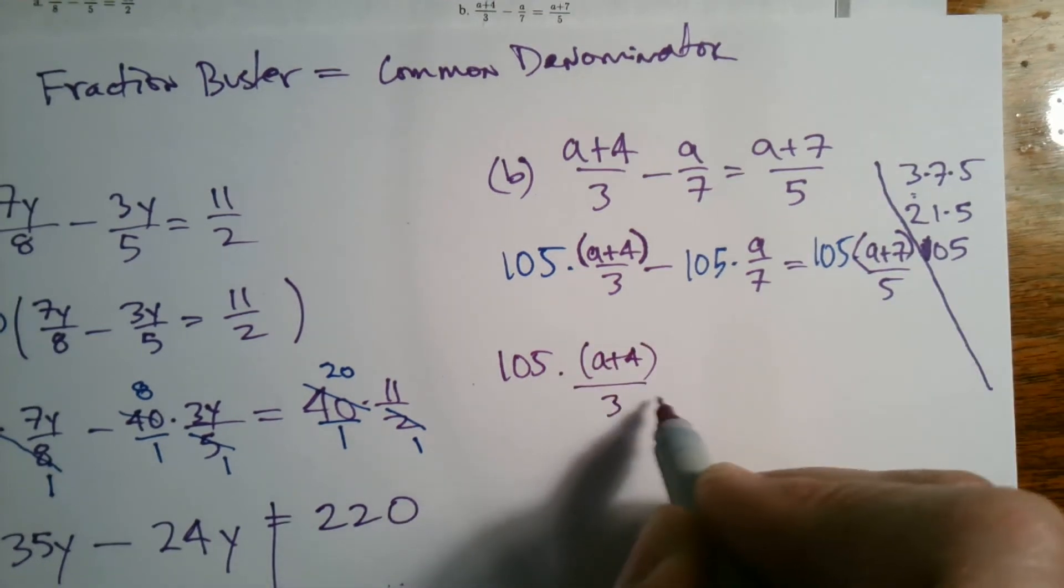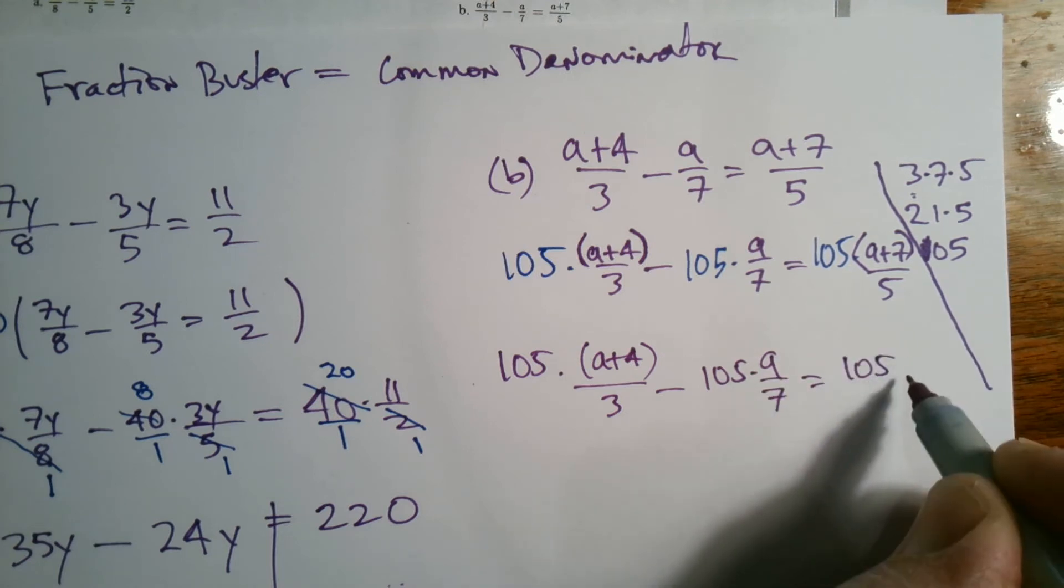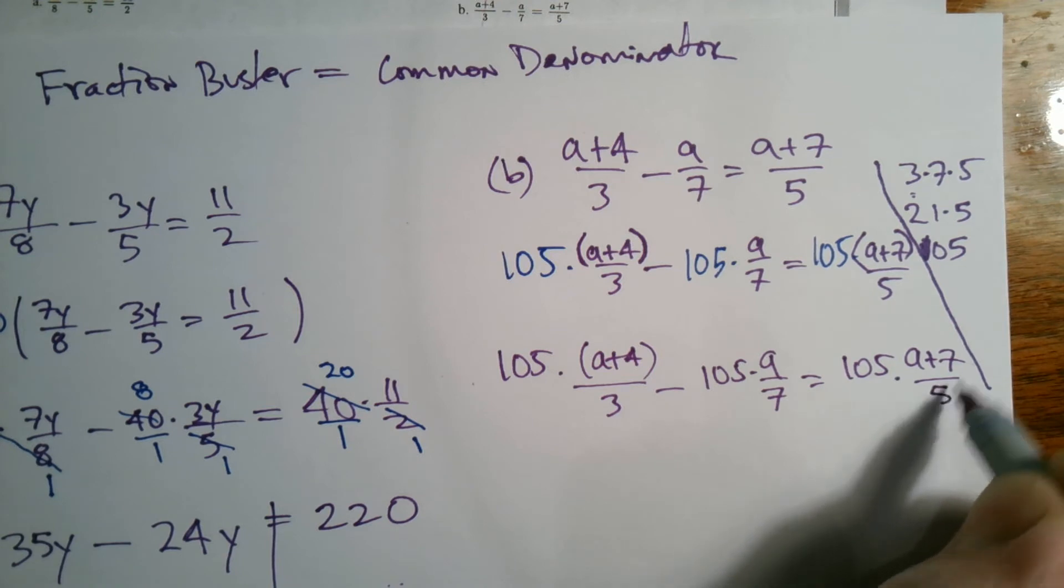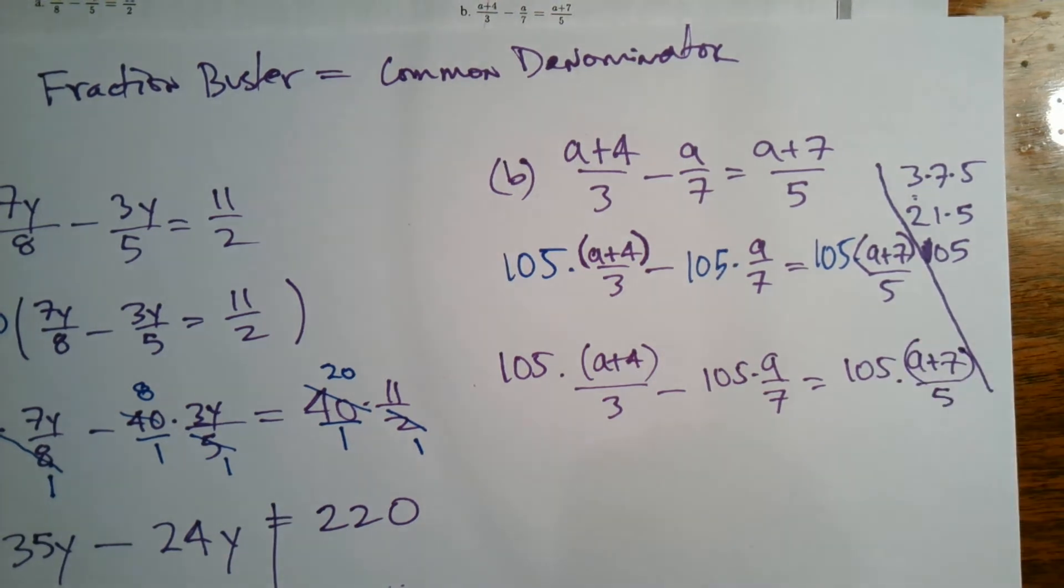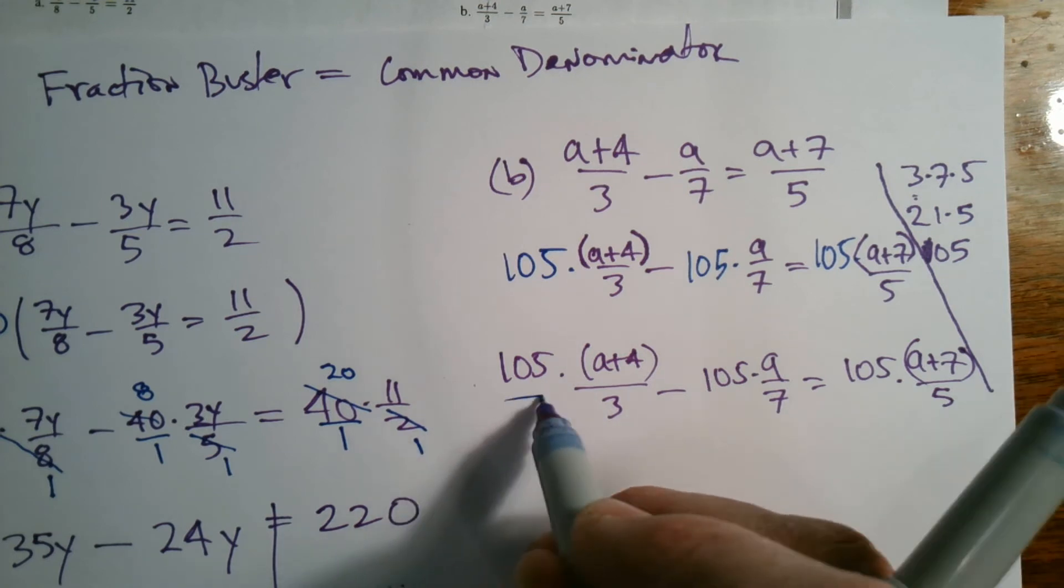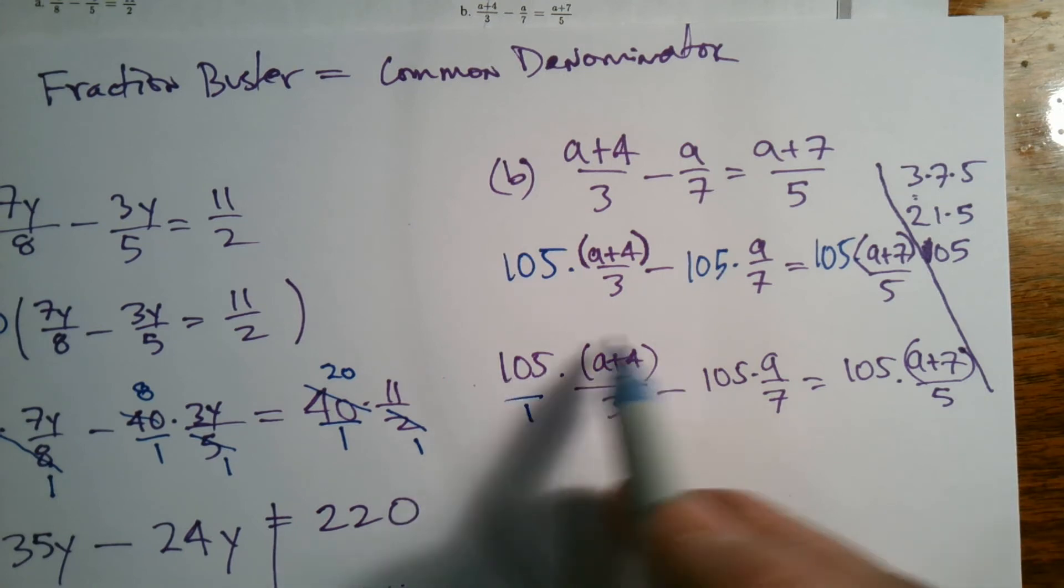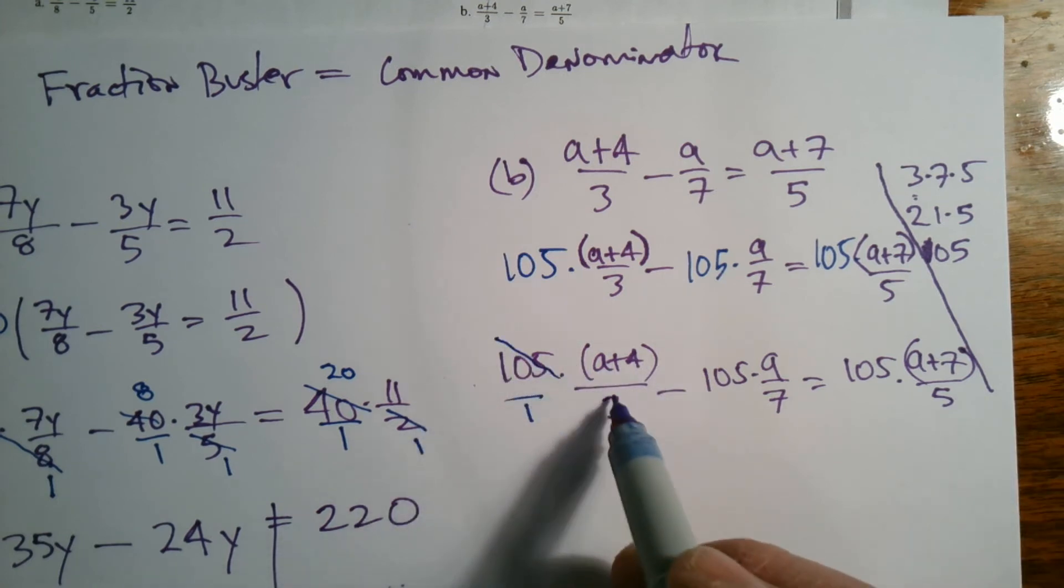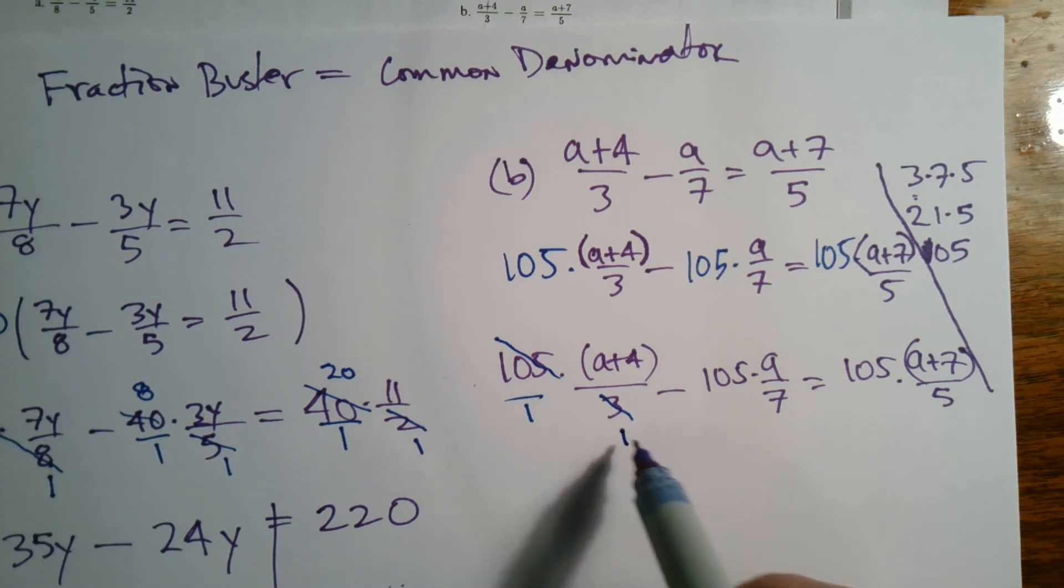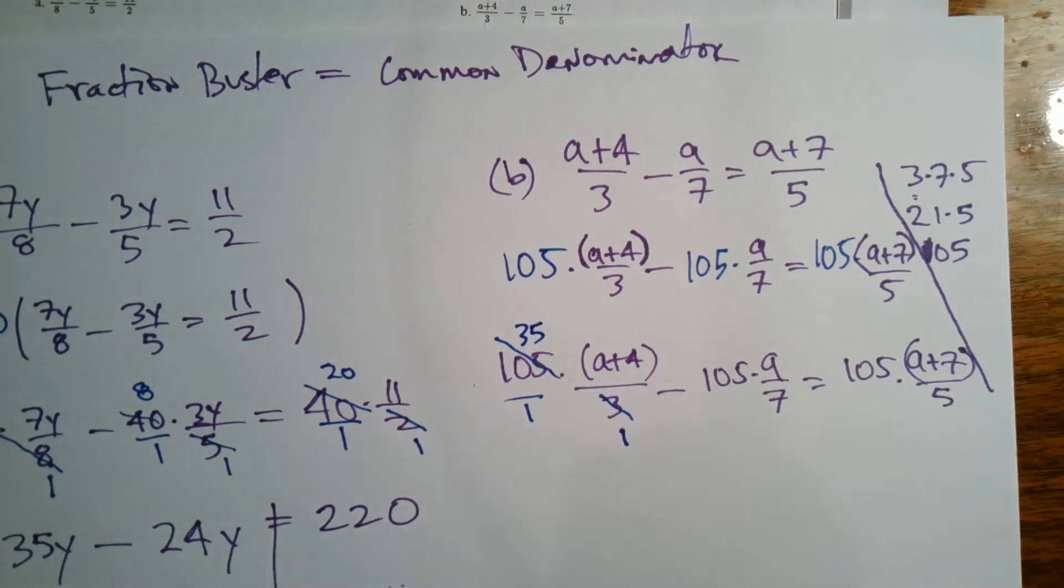Okay, so let me actually rewrite just to make it cleaner, it's not so cramped there and you can see the work: 105 times a plus 4 over 3 minus 105 times a over 7 equals 105 times a plus 7 over 5. And parentheses there. So when I'm multiplying, again, the whole thing is to look at cross reducing. So cross simplifying: 105 over 1, all of that over 3. So these two can cross simplify.